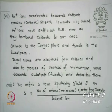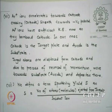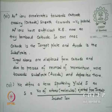The argon ions accelerate through the cathode sheath towards the minus Vc potential. Argon ions have sufficient kinetic energy and bombard the cathode. In our case, cathode is the target plate and anode is the substrate. The target atoms are displaced from the cathode by the process of reversal of momentum, and they move towards the substrate and deposit there. How that reversal occurs can be proved through energy and momentum transfer analysis.